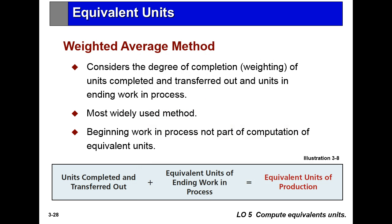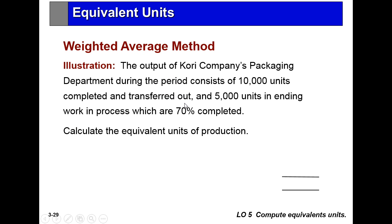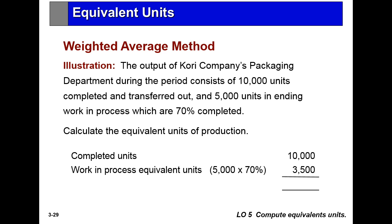You can use different methods of determining an equivalent. The weighted average method is where you consider the degrees of completion of units completed and come up with an equivalent figure — this is the most commonly used method. For example, if the output of a packaging department consists of 10,000 units completed and transferred out, and 5,000 units in ending work-in-process that are 70% complete, the 5,000 at 70% gives us 3,500 equivalent units, so the weighted average total is 13,500 completed units.